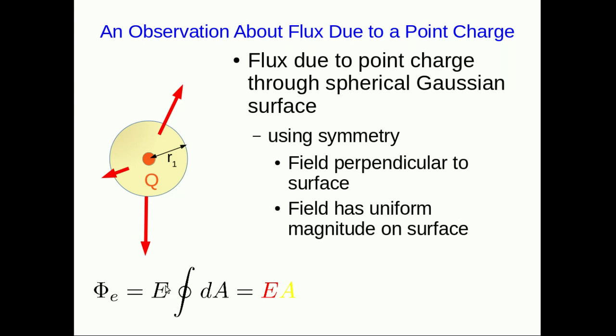I've skipped some steps because they're exactly like what we just saw. Cosine theta is 1 everywhere because the E field is perpendicular to the surface. And the E field is constant everywhere. And so I can just pull it out in front of the integral. And so we end up just with an integral dA. And that is nothing more than A, the area of the sphere.